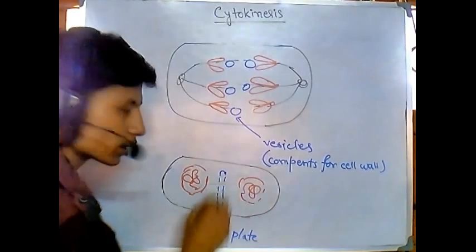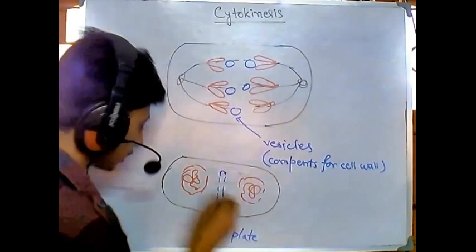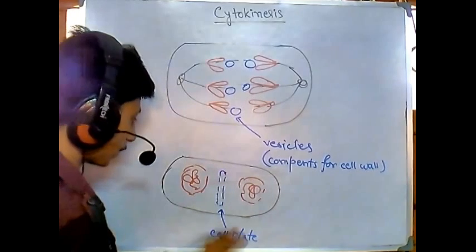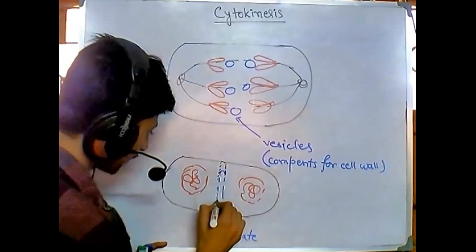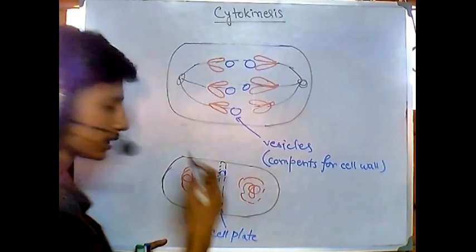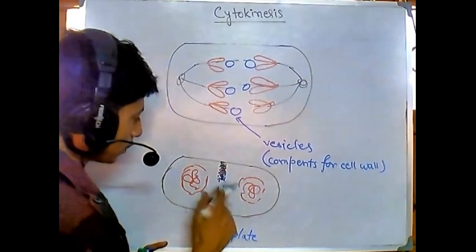Once the cell plate starts to form, other components of polysaccharides start to deposit on this cell plate. New vesicles are coming there, so polysaccharide vesicles start to fuse and they start to extend the cell plate towards the end.